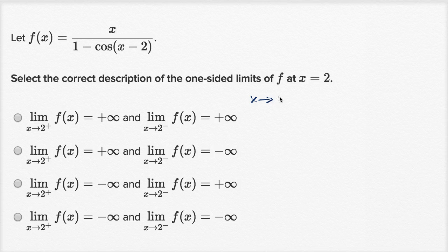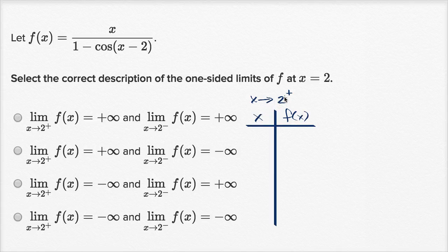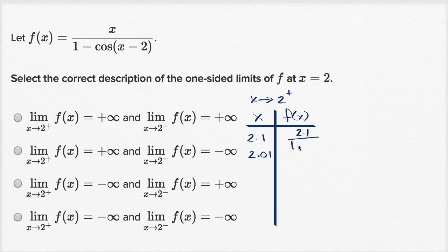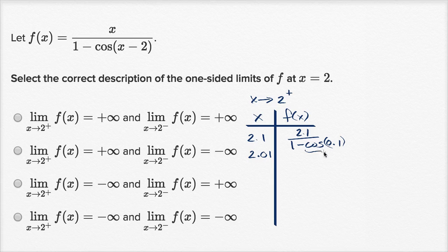If we think about x approaching 2 from the positive direction, we can make a table with x and f(x). Approaching from values greater than 2, we'd try 2.1 and 2.01. These aren't trivial to evaluate: for x = 2.1, it's 2.1 over 1 minus cosine(0.1). I don't know cosine(0.1) without a calculator, but I do know cosine(0) is 1 — so cosine(0.1) is very close to 1 but less than 1, since the cosine function is bounded between negative 1 and 1.